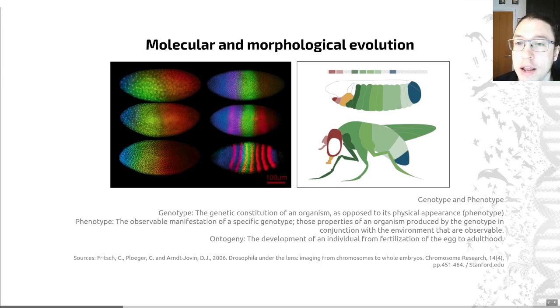So molecular and morphological evolution are linked in animals, for example, and complex organisms, other eukaryotes, often multicellular eukaryotes. The molecular and morphological evolution are linked by an organism's development. That's sometimes called its ontogeny.